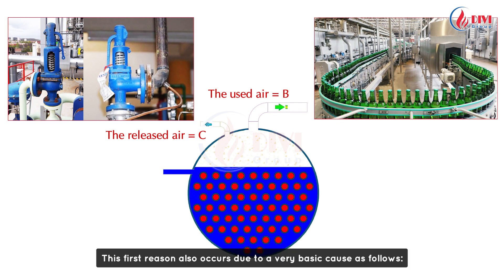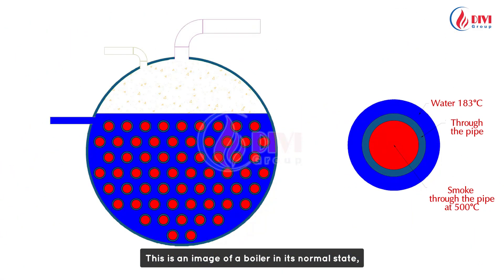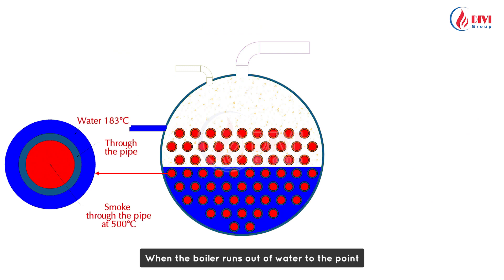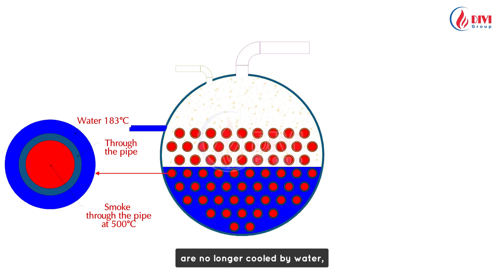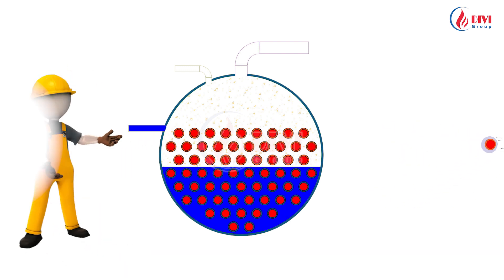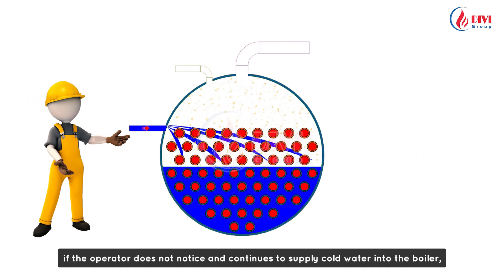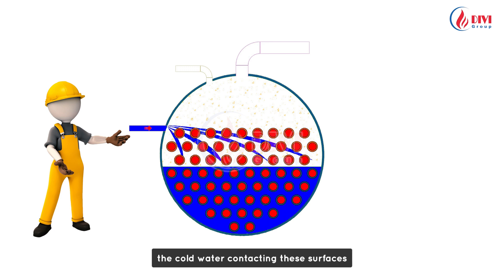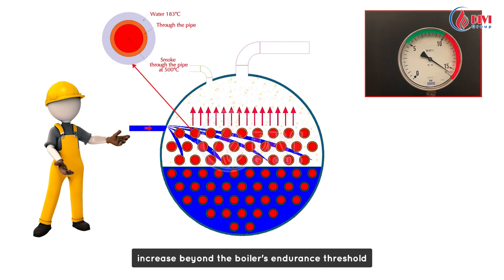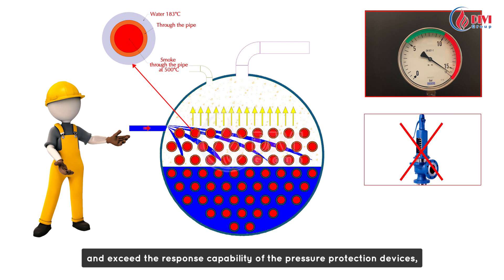This first reason also occurs due to a very basic cause. In the normal state, the boiler's fire tubes are submerged in water with smoke traveling inside the tubes. The tube walls are always cooled by water, so their temperature stays close to the water temperature, even though the smoke flow temperature is high. When the boiler runs out of water and the steam-generating steel tubes are no longer submerged, their temperature rises to nearly the smoke or flame temperature. If the operator does not notice and continues to supply cold water into the boiler, the cold water contacting these hot surfaces will instantly transform into steam at a very high rate, causing the pressure to quickly exceed the boiler's endurance threshold and overwhelm the pressure protection devices, leading to a boiler explosion.